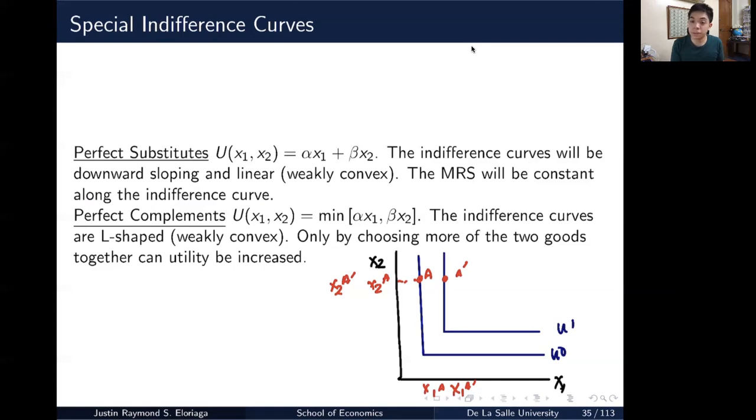So that's the case for a particular perfect complement. Note the indifference curves are still weakly convex. So in order for me to potentially go to a higher utility level, I can only do that by choosing more of the two goods together. And that's the only way that utility could potentially be increased.